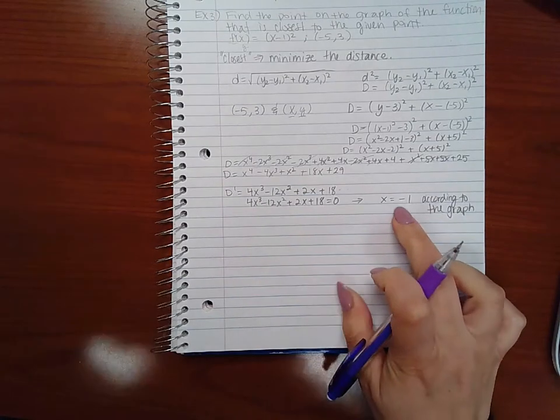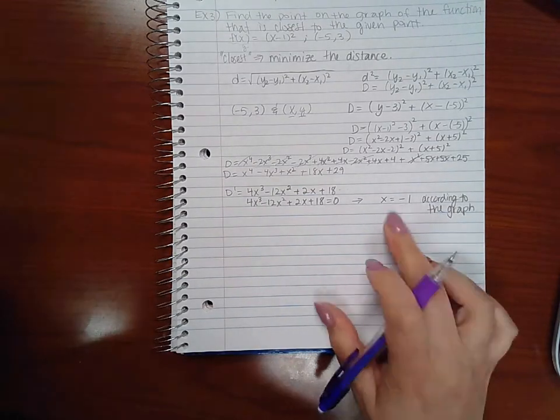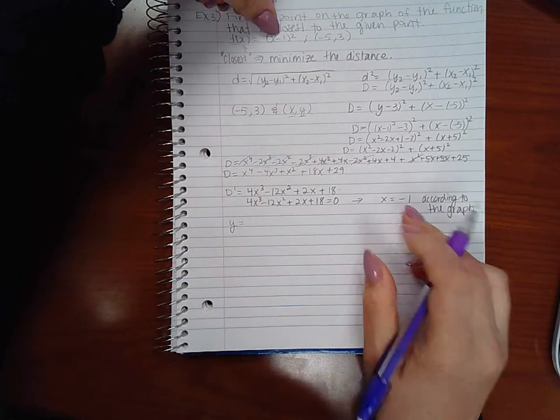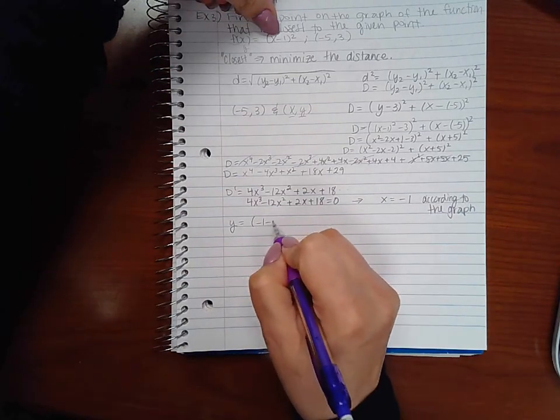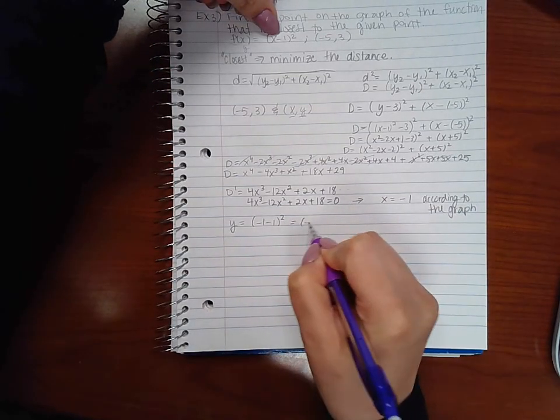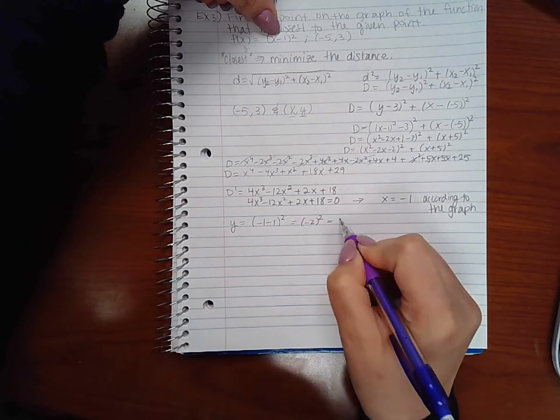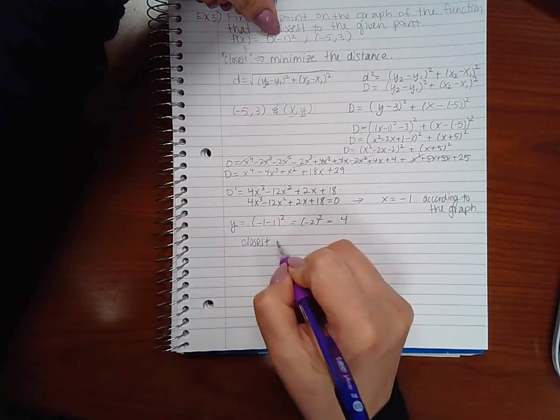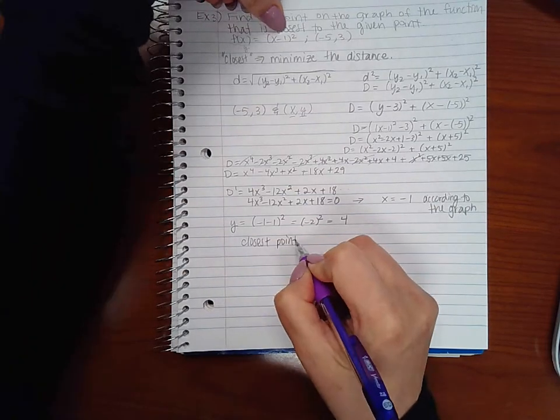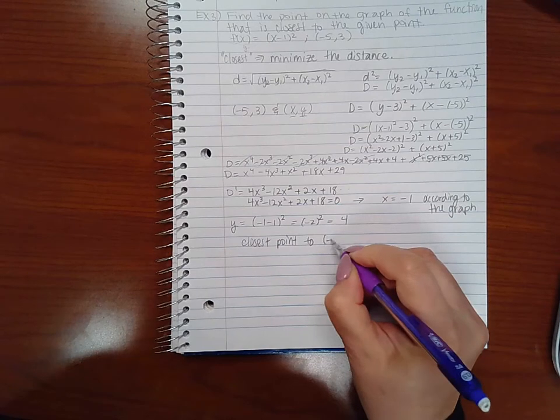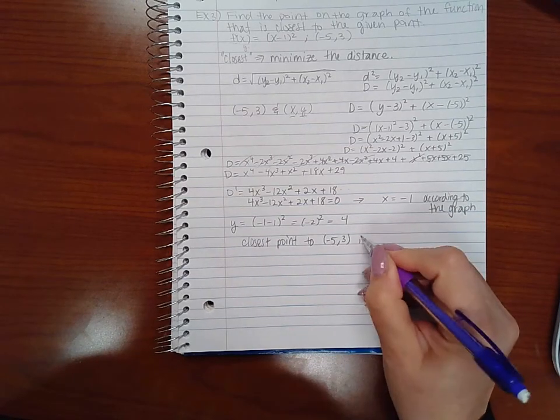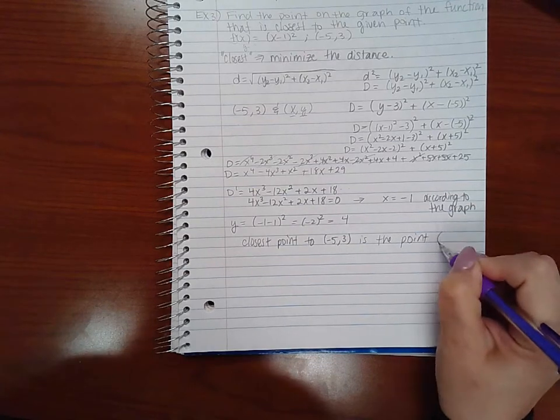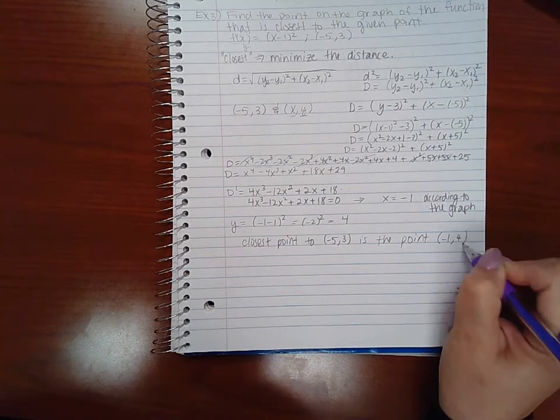If you want to know what the y value is, you have to plug that x value into the function. So I get negative 1 minus 2 squared which equals 4. So the closest point to (-5, 3) is the point (-1, 4).